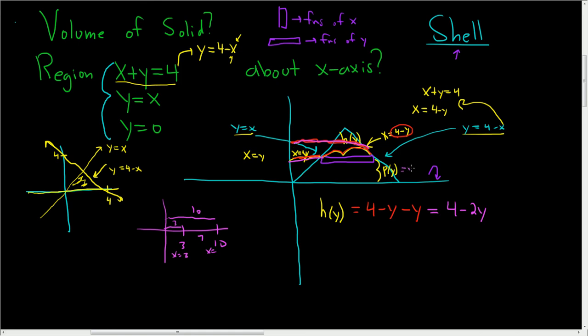P of y is simply y. This distance here is just y. So P of y is y. Now we're ready to write down the volume. So the volume is equal to 2π. And we're integrating with respect to y. So we're going from 0 to... Oh, looks like we have to figure out what this y value is.